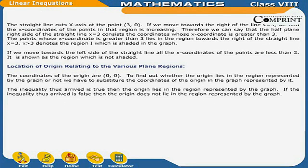The line crosses the x-axis at the point (3, 0). If we move towards the right of the line x = 3, the x-coordinates of points in that region are increasing. Therefore, the half plane to the right of x = 3 consists of coordinates whose x-coordinate is greater than 3. The region x > 3 is shaded in the graph. Moving to the left, all x-coordinates are less than 3, shown as the unshaded region.